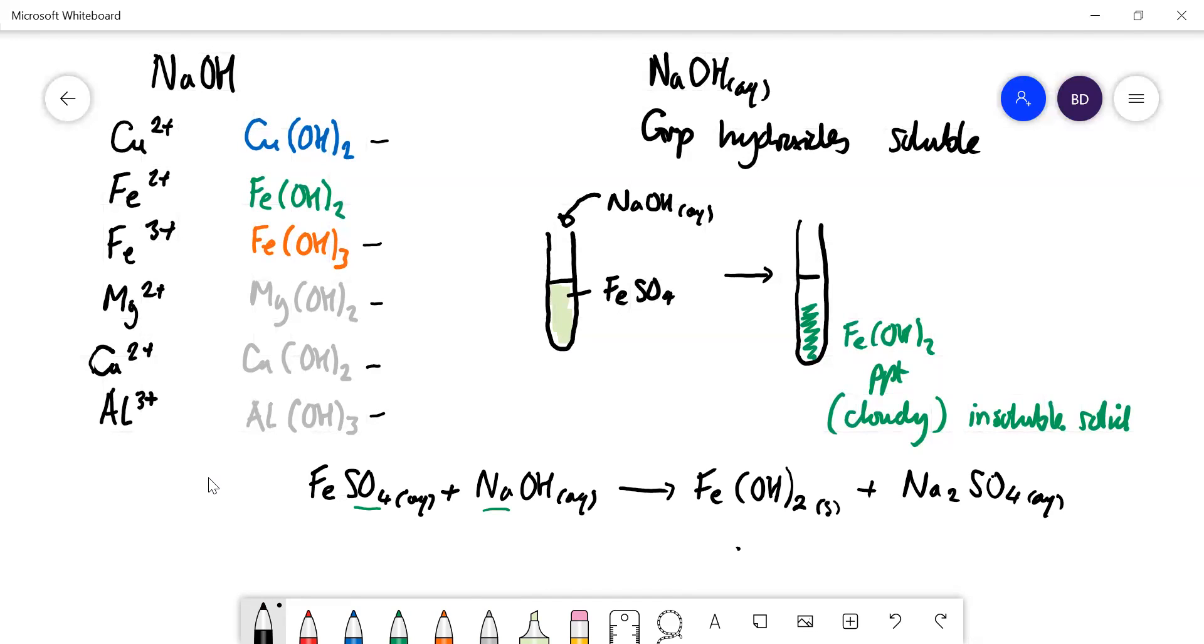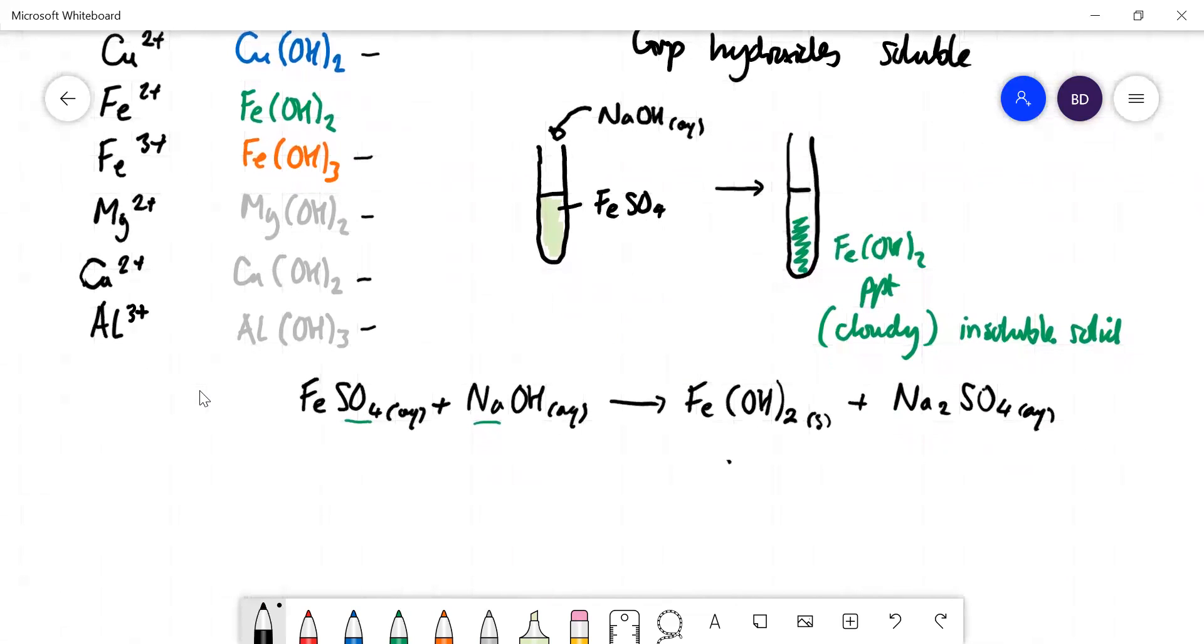If you wanted to write that as an ionic equation, when you dissolve an ionic substance it splits. Those ions separate, so you have a load of iron 2+ ions completely away from the sulfate, floating around in water. You've got sulfate ions which are 2-.